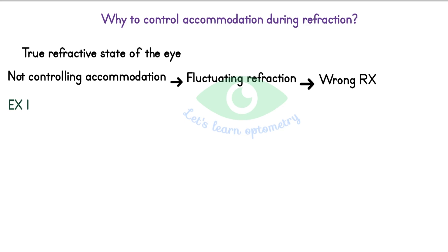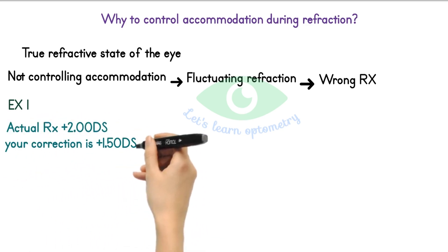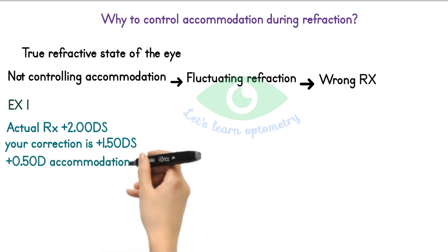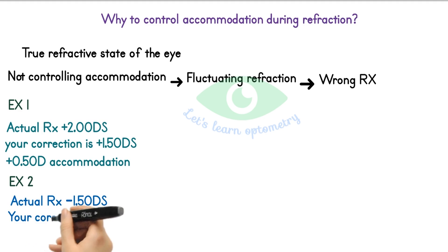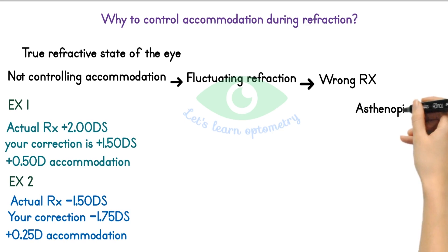For example, if the true error is plus 2 for a patient but you only correct them by plus 1.50, the patient will see the object clearly with this additional use of 0.5 accommodation. Another example: if the true error is plus 1 minus 1.5 but you correct them with minus 1.75, that patient will constantly use plus 0.25 of accommodation to see clearly. The overuse of accommodation may cause asthenopic symptoms like headache, watering, and eye strain.